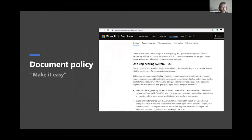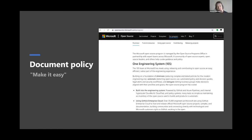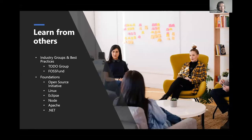We have an open source software policy at Microsoft and our goal is to make it easy to understand and available to everybody. We've summarized and shared much of our policy on our website — if you go to opensource.microsoft.com and go under our program, you can see an overview of the tools we're using and details on using open source, contributing, and releasing projects. We talk about what our policies and review processes look like for using, contributing to, or releasing open source software.